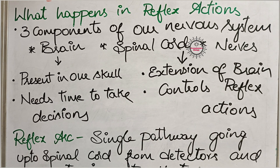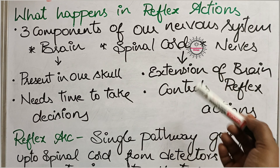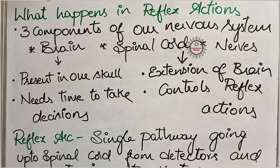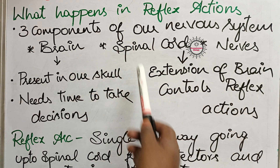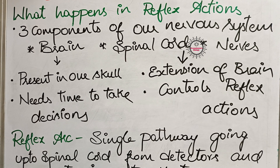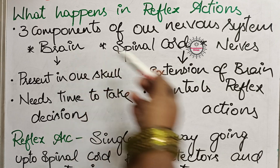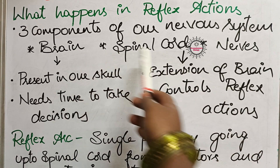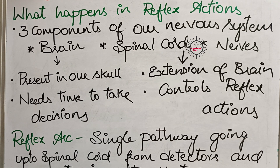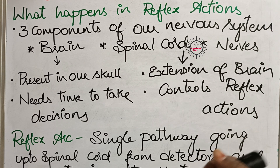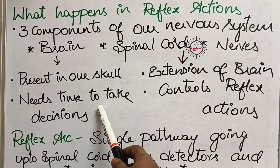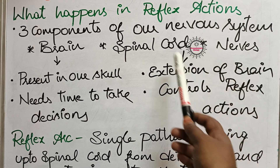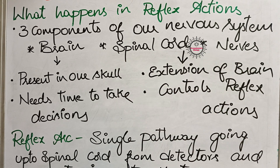If any dangerous situation is detected around us, that message is sent to the spinal cord first. The spinal cord analyzes that information and gives responses within a fraction of seconds. The third component is nerves. Nerves are present everywhere in our body and are connected to both the brain and spinal cord. These nerves take information — stimulus — from outside and bring it to the brain and spinal cord for decisions, and they also take responses from the brain and spinal cord and deliver them to the target organ.